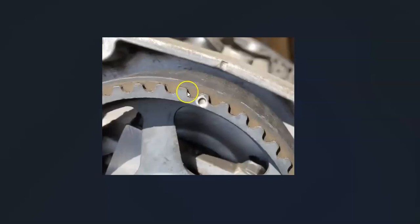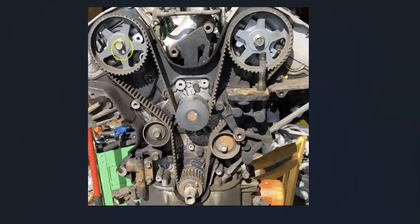If one of those notches is off — before or after where it should be — then you know that timing belt has slipped and there's an issue, because all these gears need to be lined up and all those notches need to match, or else the engine won't run correctly. One thing to keep in mind: if timing belts get really old, sometimes everything can match up when you check it statically, but when the engine is working they stretch because they're worn.